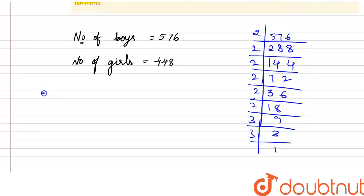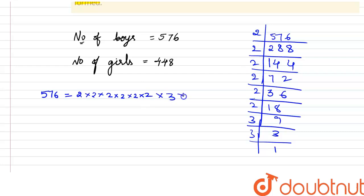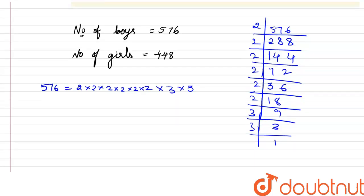So we can write: 576 = 2 × 2 × 2 × 2 × 2 × 2 × 3 × 3, that is six 2s and two 3s. Now let us find the prime factors of 448.